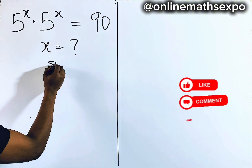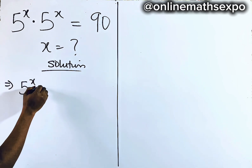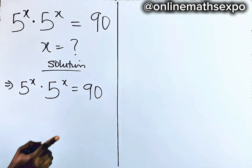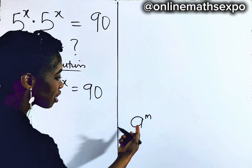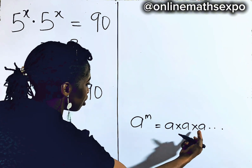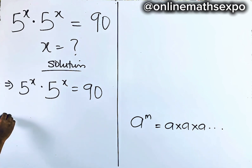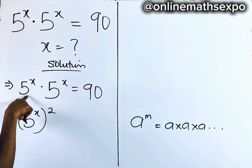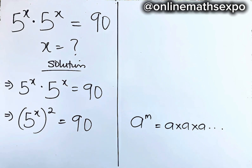We'll begin with the solution. Let's repeat what we have: 5 to the power of x multiplied by 5 to the power of x is equal to 90. Remember from definition that when you have a to the power of m, this m shows you how many times a is multiplied. So when you have 5 to the power of x repeated two times, it is the same as 5 to the power of x, raised to power 2. These two shows how many times this is multiplied, and this is equal to 90.